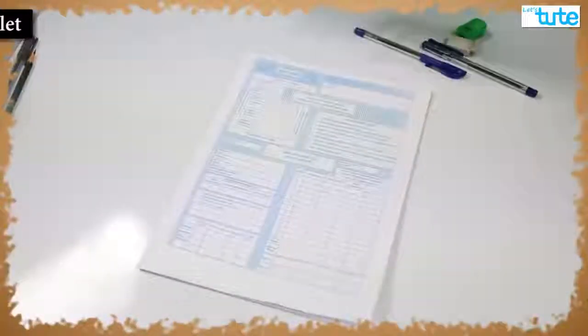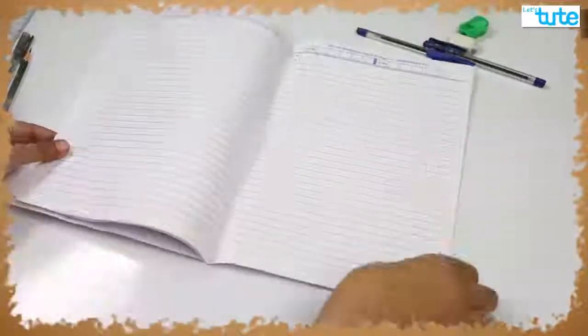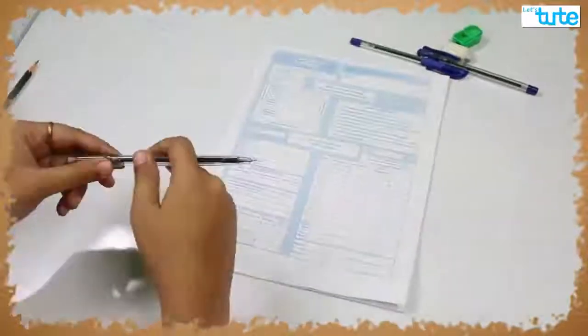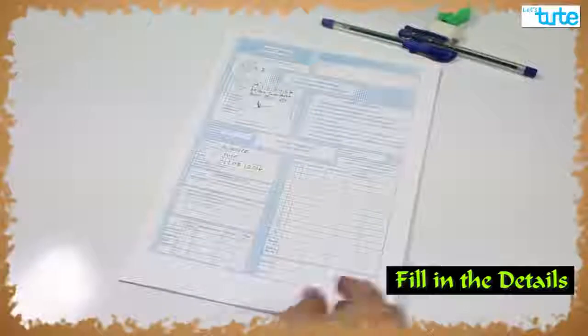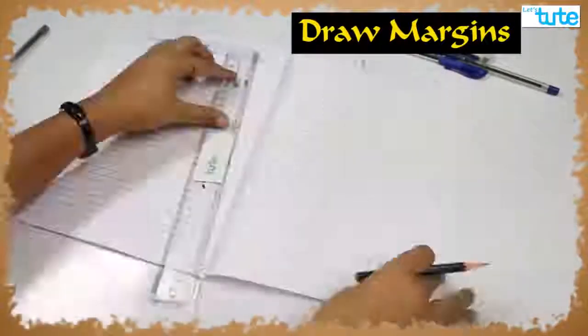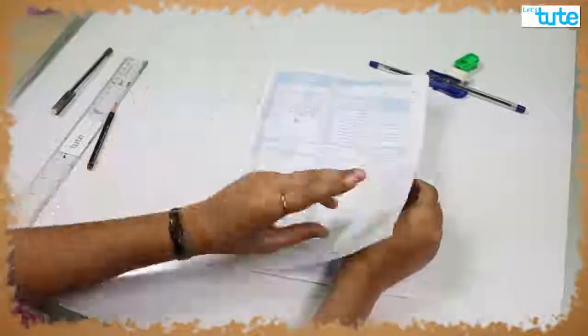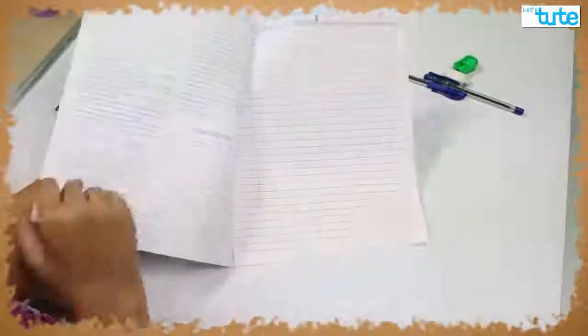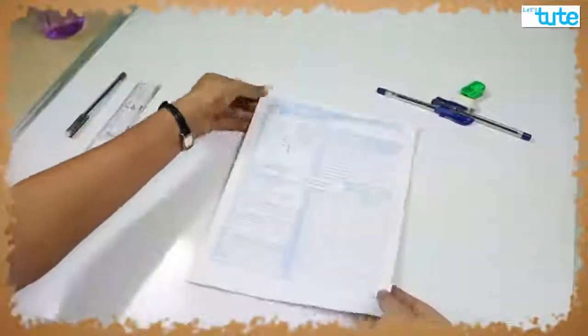The moment you get your answer sheet, the first thing you should do is check whether all the pages are ruled and are proper. Then, fill in the required details correctly. Before you start writing your paper, drawing margins is very important, as there are chances that the edges might tear. Also, when you tie your supplement, the things written at the edge here will not be visible properly to the examiner.